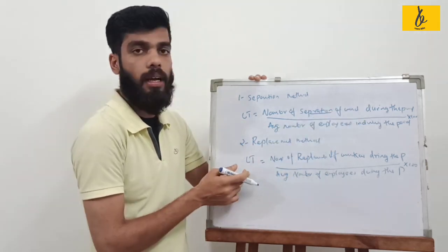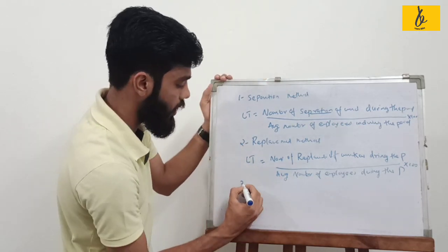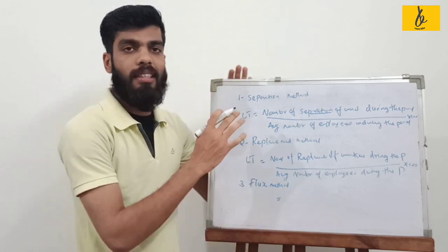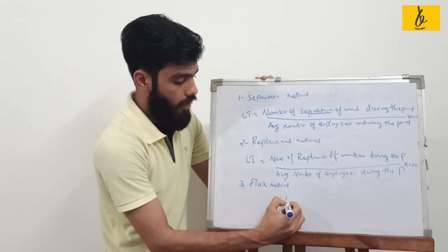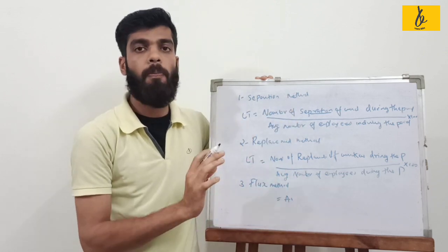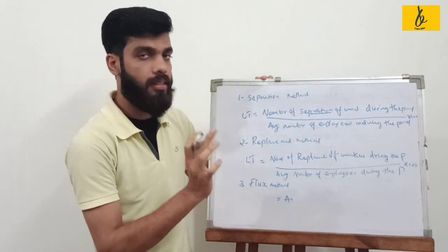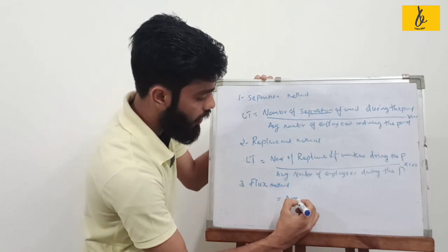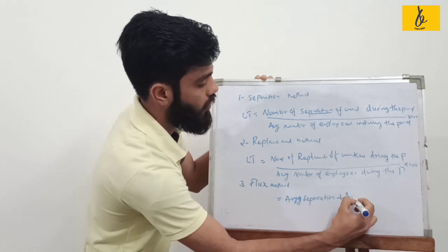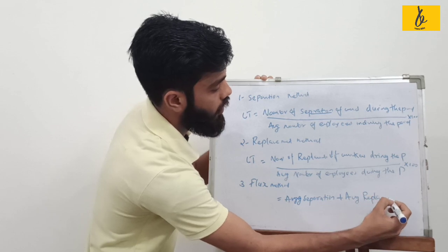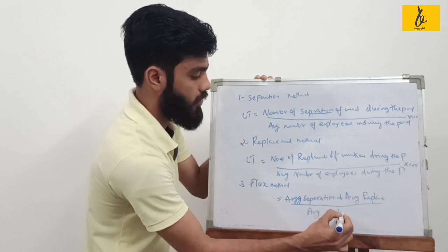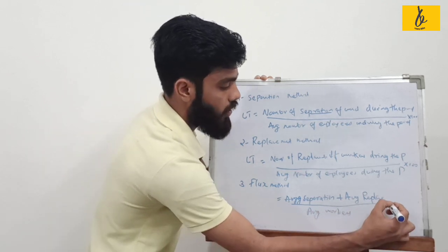The third method is a mix of replacement and separation — the flux method. You will have average separation plus average replacement, divided by average employees, into hundred.